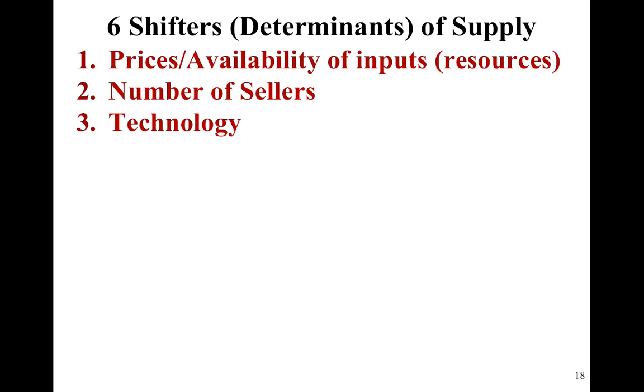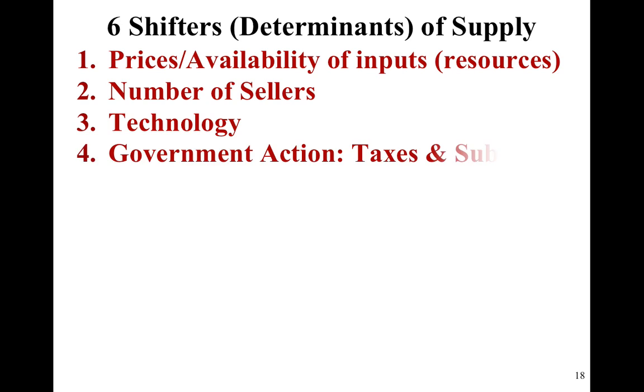New technology can shift supply. Typically that shifts supply out when new technology is made available, making production more efficient and things like that.